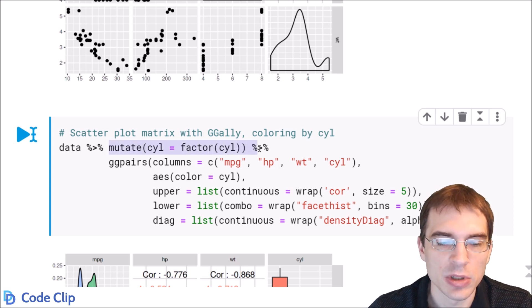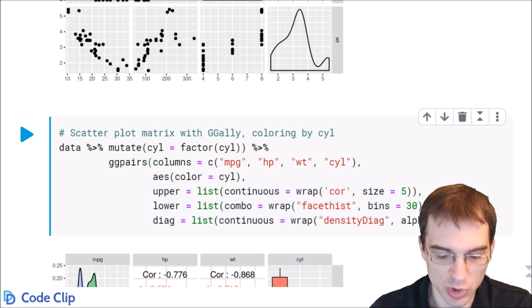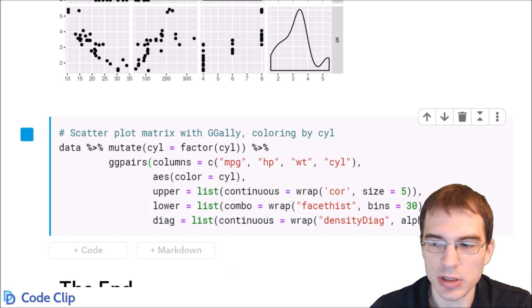So first we're going to change cylinder to a factor. We're going to plot the same variables as above, but we're also going to add a new aesthetic, coloring by cylinder. We're also going to just set some extra options with transparency and whatnot so that the plot looks better. You don't have to worry too much about what this is doing. I'm just going to run it and show you the result here.